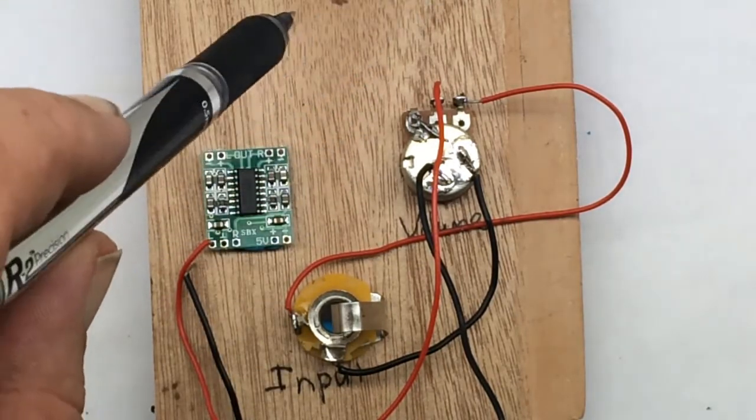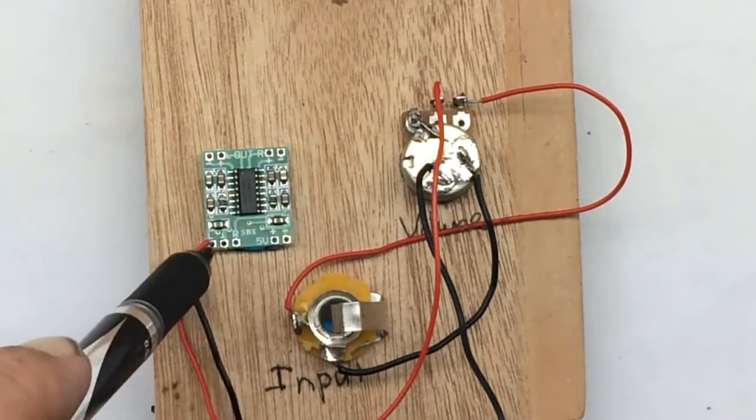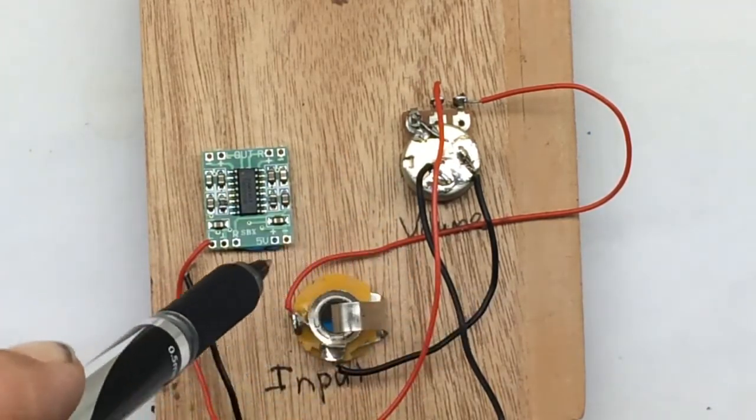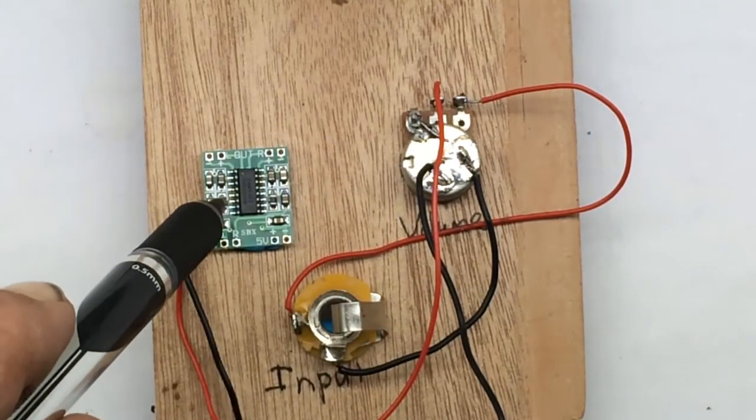Then our output is going to come to the left like I said, and our ground just jumps off the ground. All the grounds stay together. So this will give us a volume control to control this chip output by controlling its input.